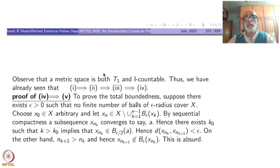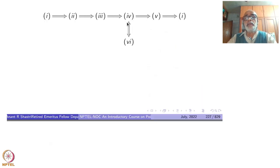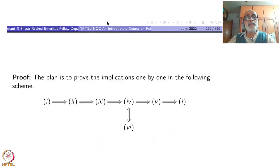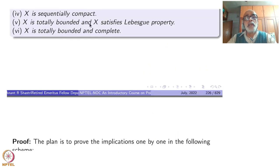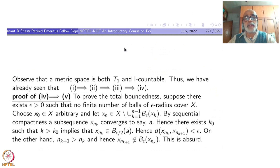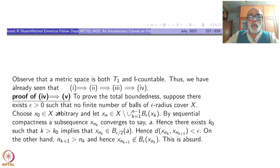Let us prove 4 implies 5, namely: a sequentially compact metric space is totally bounded and satisfies the Lebesgue property. To prove total boundedness, suppose there exists a positive epsilon such that no finite number of balls of epsilon radius cover X — that means there is no epsilon net. That is the negation of total boundedness.